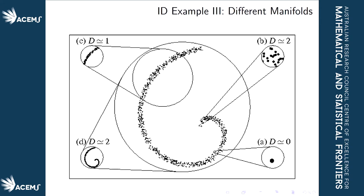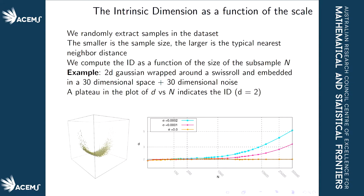There is an issue related to the intrinsic dimension and the sample of data that you get to see. We simulated a two-dimensional Gaussian wrapped on a Swiss roll and embedded in a 30-dimensional space with added noise. Depending on the noise level and the sample size — on the horizontal axis — you get a different idea of the intrinsic dimension, shown on the vertical axis. The three different line colors relate to three different levels of noise. With larger and noisier samples, you can get a false idea of what the intrinsic dimension is.